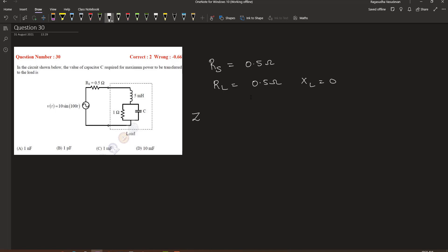The effective impedance of the load is given by the impedance contributed by the 5mH inductor plus a parallel combination of this resistor 1 ohm in parallel with the capacitive reactance Xc.